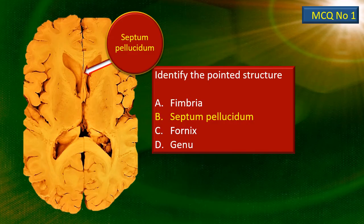Let's now have a look at the MCQs once again with answers. MCQ number 1: the structure is in the midline — a mid-sagittal structure. That's the septum pellucidum. The fornix is right behind it and in front is the genu of the corpus callosum.